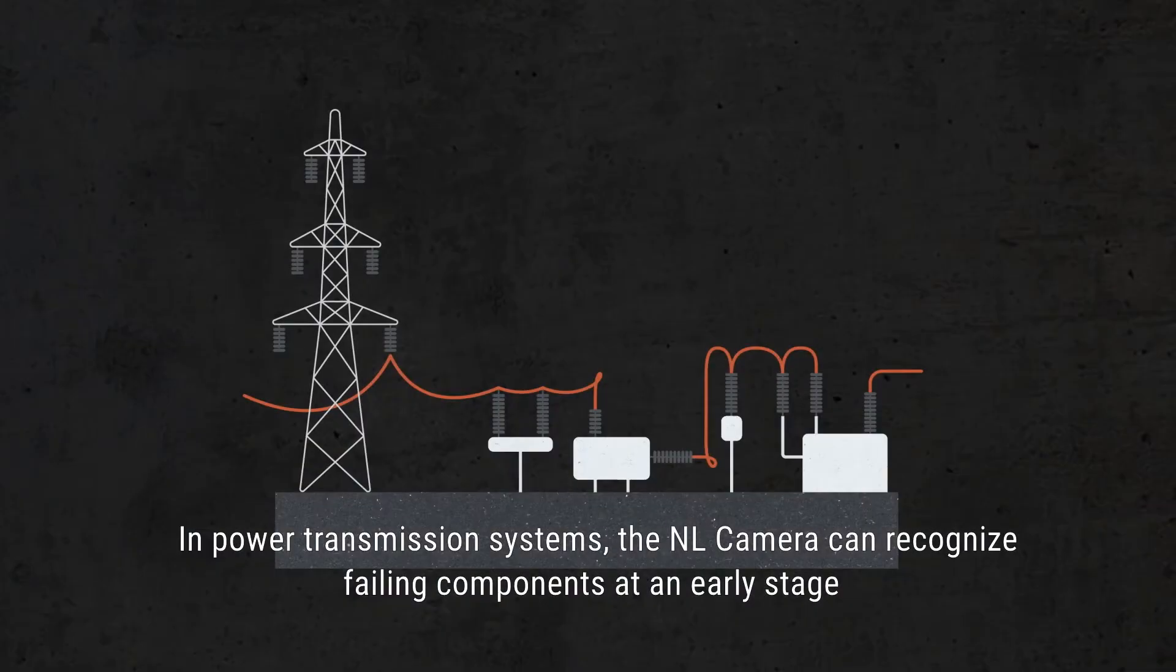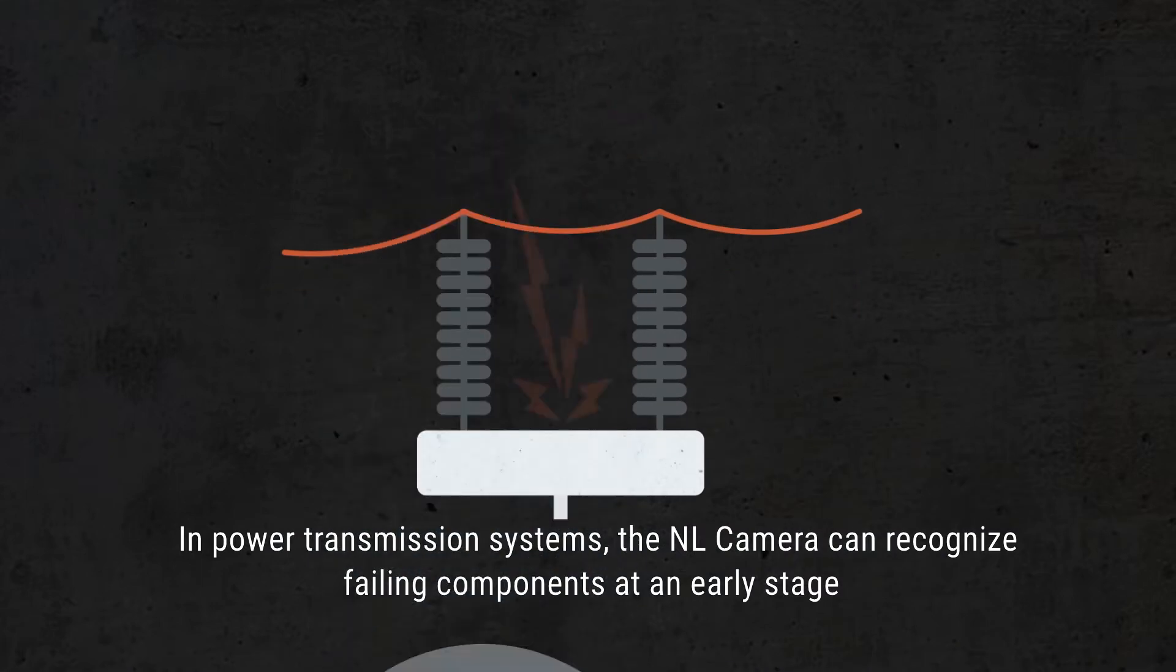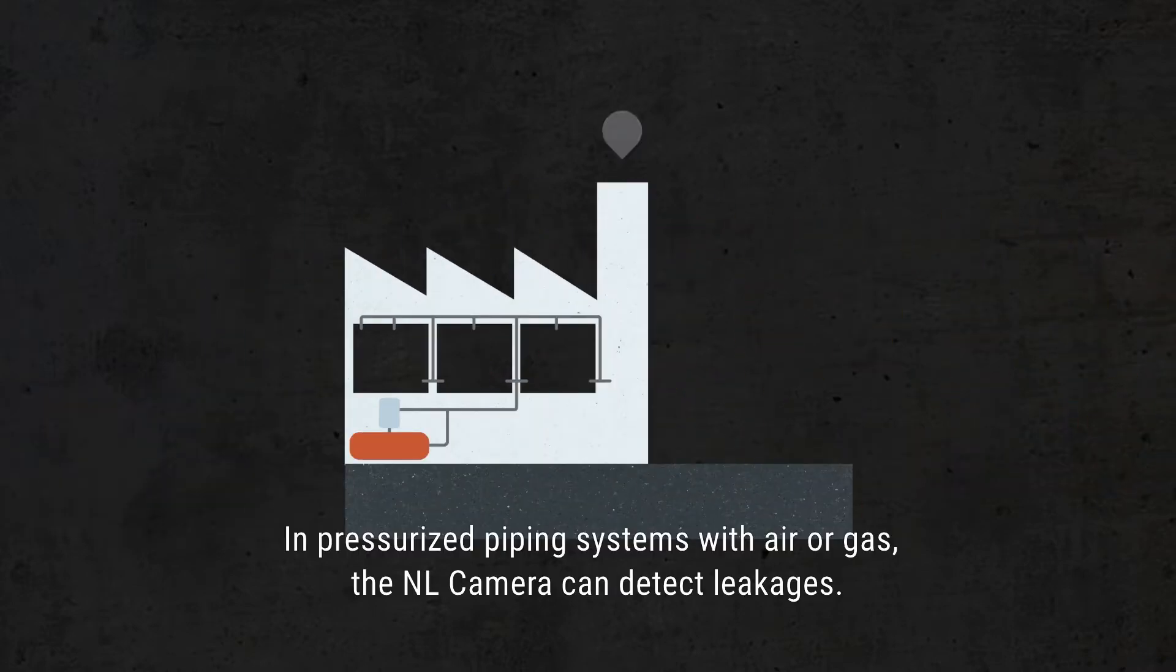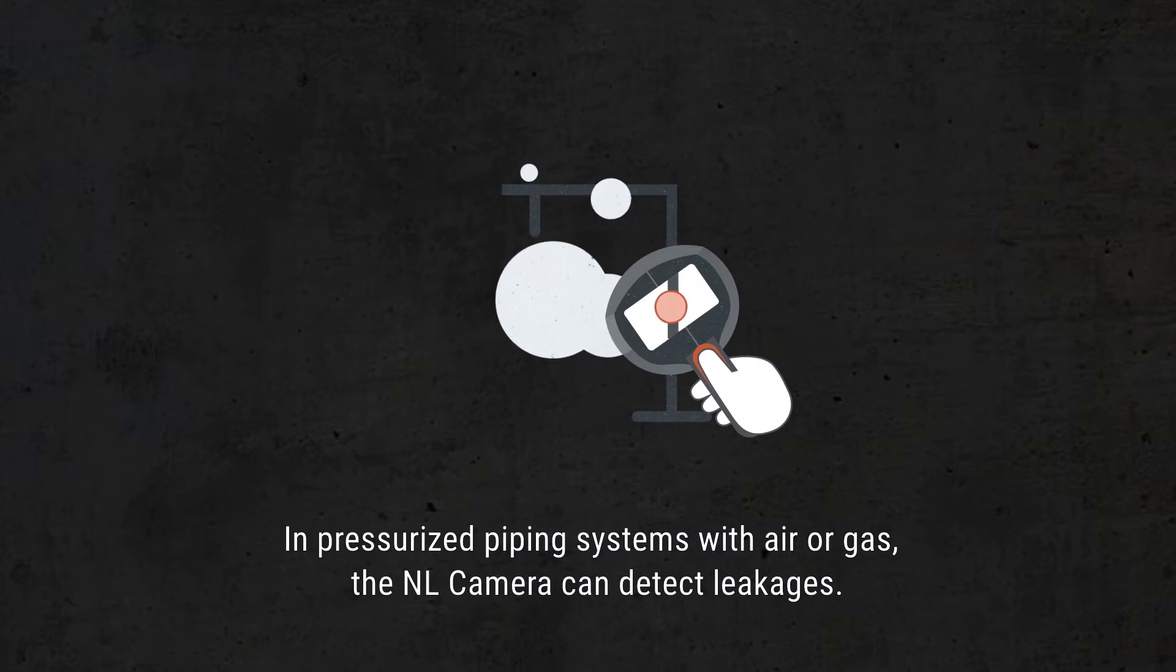In power transmission systems, the NL camera can recognize failing components at an early stage, before it's too late. In pressurized piping systems with air or gas, the NL camera can detect leakages.